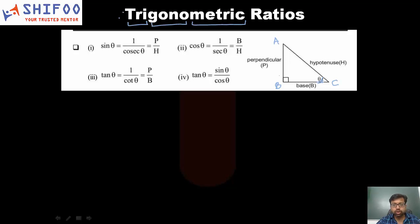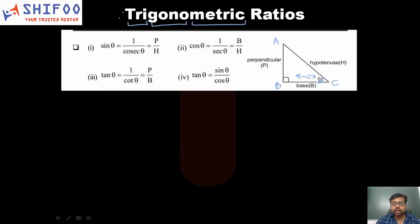The sides AB and BC can be used interchangeably as perpendicular or base, because the words perpendicular and base are essentially relative terms — relative to the angle that you have chosen. Here we have taken angle C as theta. The side on which it rests is called the base, and the side right in front of it, opposite the angle we are considering, is called the perpendicular. The hypotenuse always remains the same since there is just one longest side in a right-angle triangle, opposite the 90-degree angle.